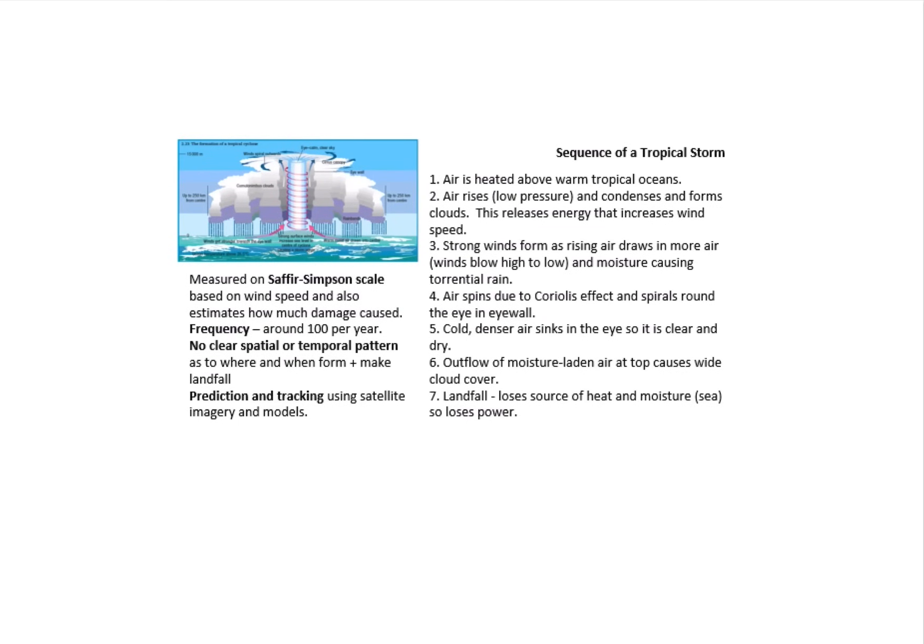Here I've popped in your sequence for tropical storm formation. Just to recap the formation for you—if you need to pause it here, please do so. Remember, your tropical storms are measured on the Saffir-Simpson scale based on wind speed and how much damage might be caused. Frequency, we get about 100 of these a year. There's no clear spatial or temporal pattern, and prediction and tracking mostly relies around satellite imagery and models.